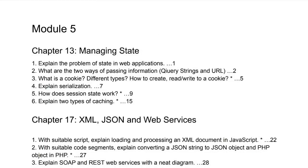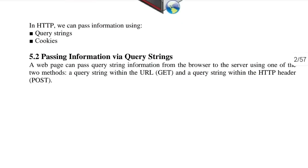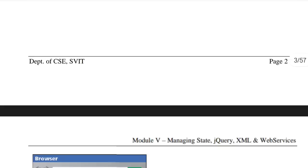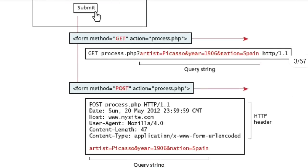The next question is: what are the two ways of passing information? The two ways are query strings and cookies — not URL. Let's have a quick look at what these are.